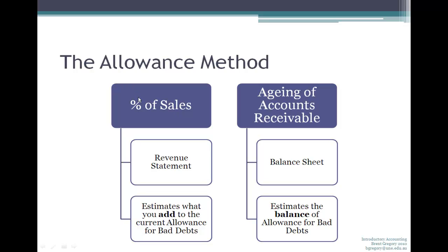The percentage of sales method — probably better known as the percentage of credit sales method — is based on your revenue statement. You estimate what you're going to add to your current allowance for bad debts, so it's really an estimate of your bad debt expense for the month.